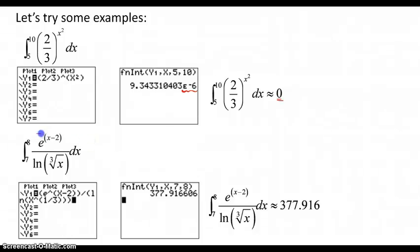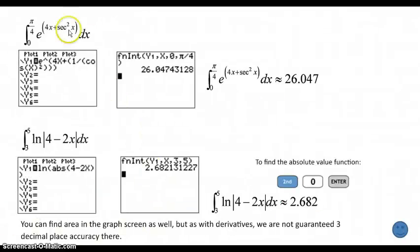Here is that kind of ugly looking function that we took the derivative of before. Here we're going to find the accumulated area between seven and eight on that function. Be very careful putting that into y1. You should get this for the answer, and you want to record that answer accurate to three decimal places. And finally, these two functions, from 0 to pi over 4 underneath this function, or in between this function and the horizontal axis, there's the value that you get, accurate to three decimal places.